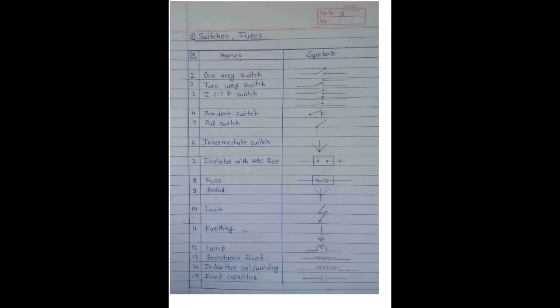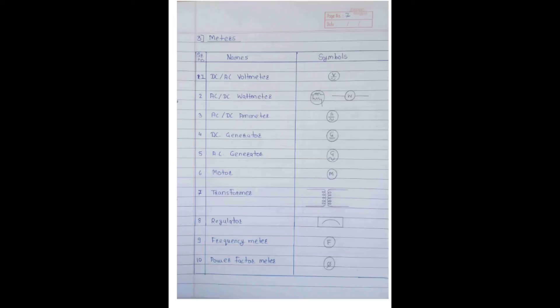These are the switches: fuse, one-way switch, two-way switch, TP switch, pendant switch, pull switch, intermediate switch, isolator with HRC fuse, fuse, fault, earthing, lamp, resistance, fixed inductive coil winding, and fixed capacitors.